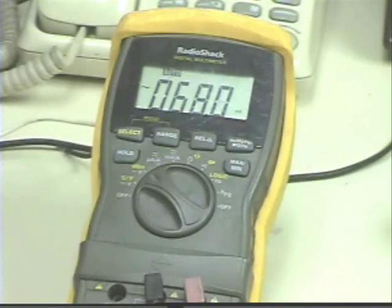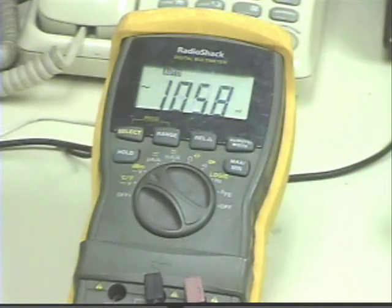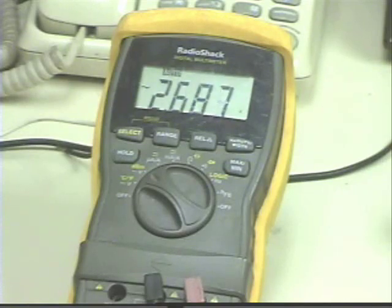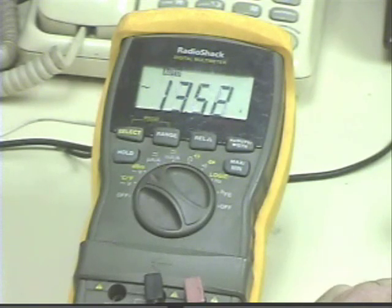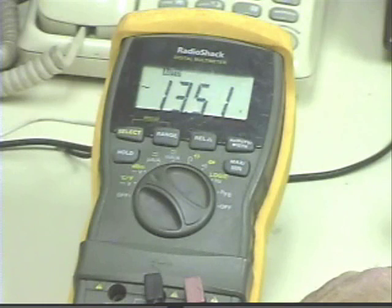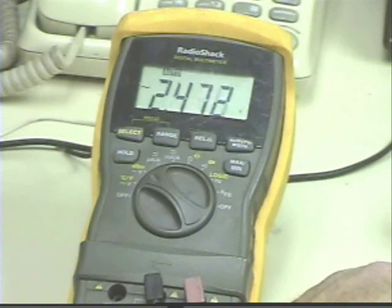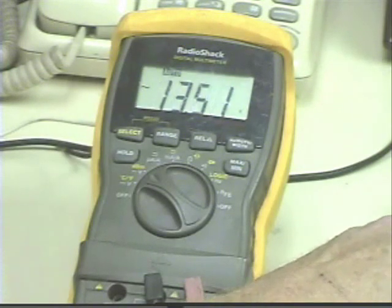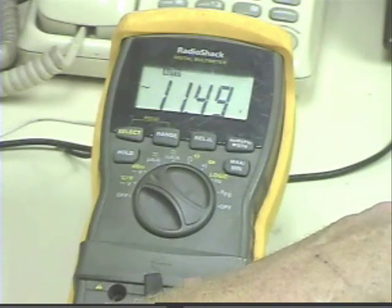With the voltmeter set for AC, we're going to measure the output of the transformer as it enters the diode bridge, and we are reading 13.51, 13.5 volts.